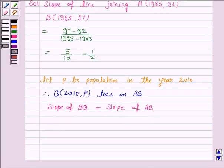Now, slope of BQ can be obtained by the formula Y2 minus Y1 upon X2 minus X1. Here, Y2 is P and Y1 is 97. So, it is P minus 97 upon X2 minus X1. X2 is 2010 and X1 is 1995. And slope of AB is known to us which is 1 by 2.